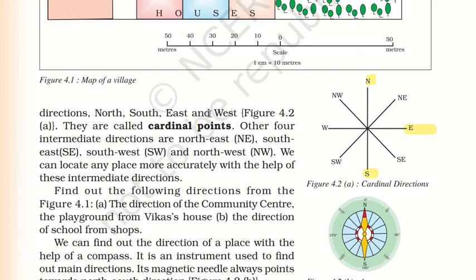The cardinal points, as we can see here, include Northwest, Northeast, Southwest, and Southeast. So you can understand all these direction points.